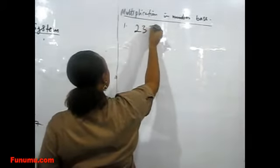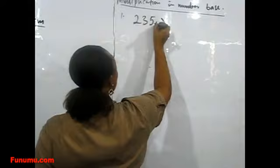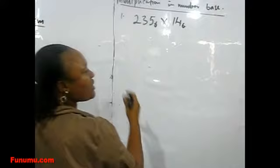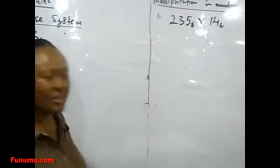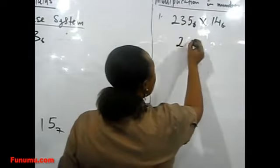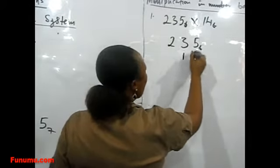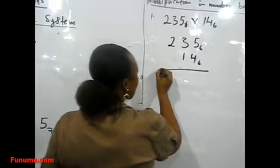The normal way we arrange our long multiplication, we also arrange it. So we have our 235₆ and the problem is 14₆ times.